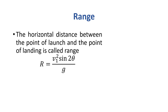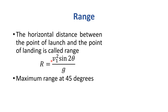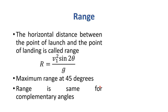The range formula is: R = vi² × sin(2θ) / g, where vi is the initial velocity and g is the acceleration due to gravity. Maximum range occurs at 45 degrees because, for any given velocity and acceleration, range is a function of sin(2θ), and the maximum value of a trigonometric function is 1. sin(2 × 45°) = sin(90°) = 1.